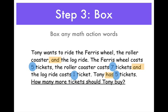Step 3, almost there. Now we need to box — box any math action words. I know that Tony wants to ride 3 rides all together: the Ferris wheel, the roller coaster, and the log ride. So I box 'and' because I know that I need to add. I did the same thing for the second sentence. The third sentence says Tony has 5 tickets — box 'has' because I might need to subtract.